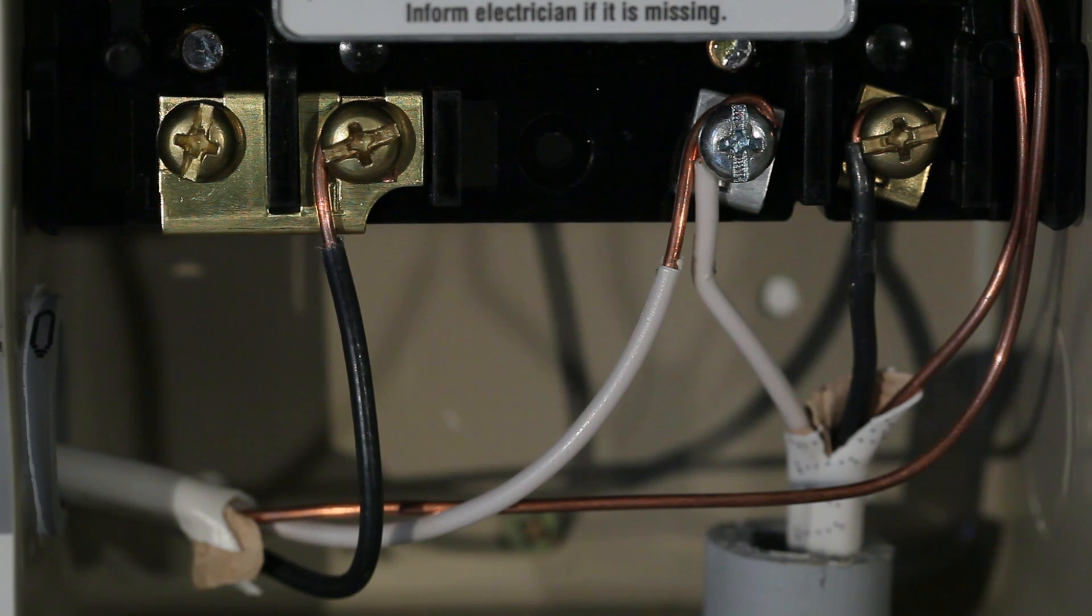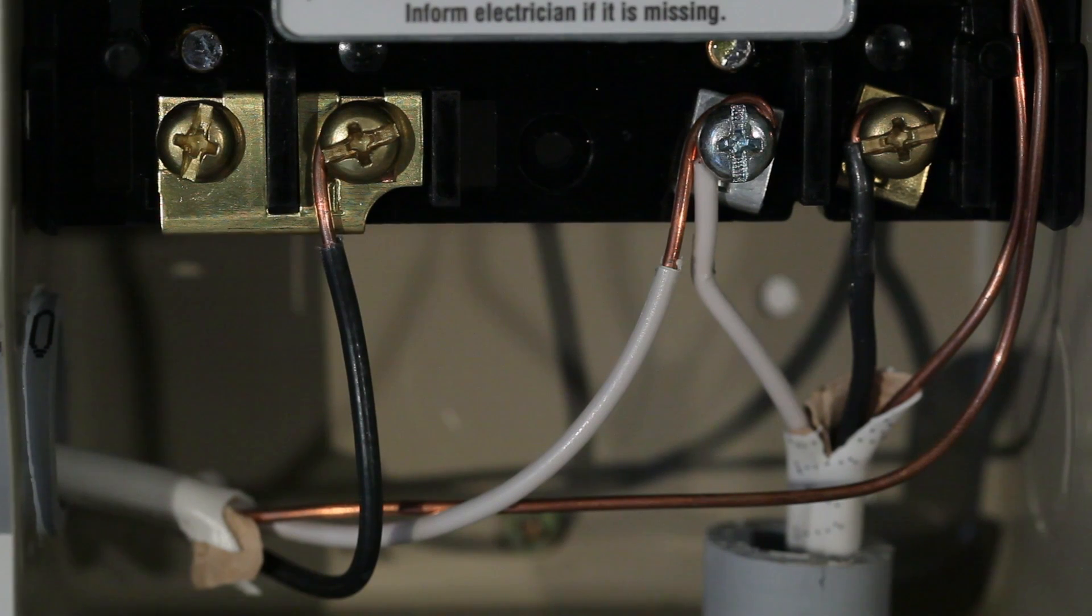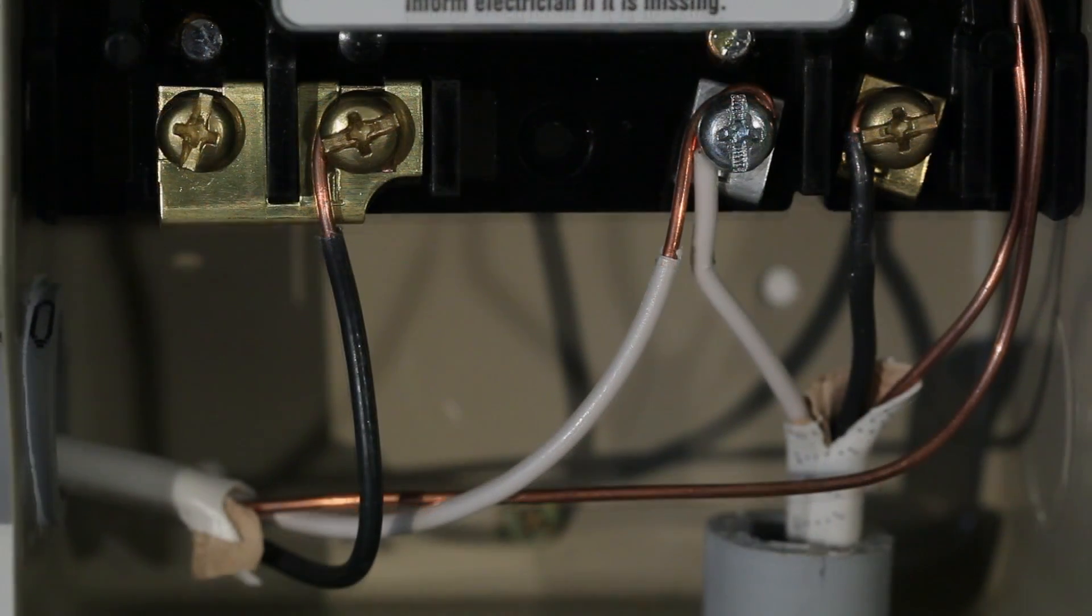In our example we're using standard 14 gauge two conductor Romex style with a ground wire. The black wire is the hot wire and the white wire is the neutral. On the left we have the supply leg coming from our main panel. On the right we have our switched leg connected to the load we want the timer to control.